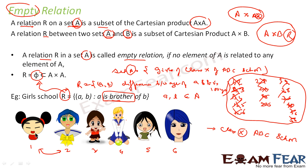I hope this is clear. Similarly, for two sets — for example, a set of boys and a set of girls — if you create a relationship such that not even a single pair matches the criteria, then it is called an empty relation. You take a set, derive the Cartesian product, define a pattern like 'A is brother of B,' and if there is zero match, the relation is an empty relation.